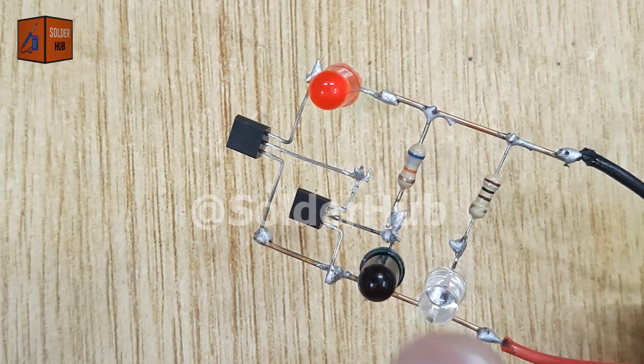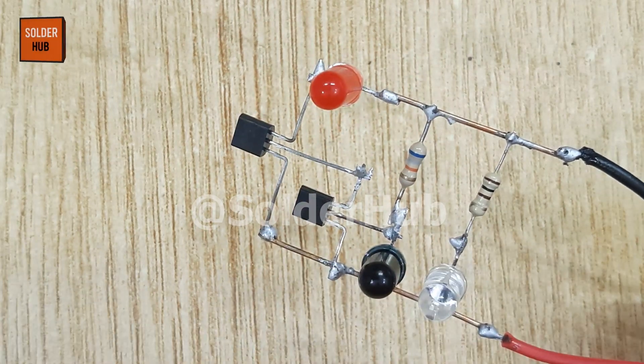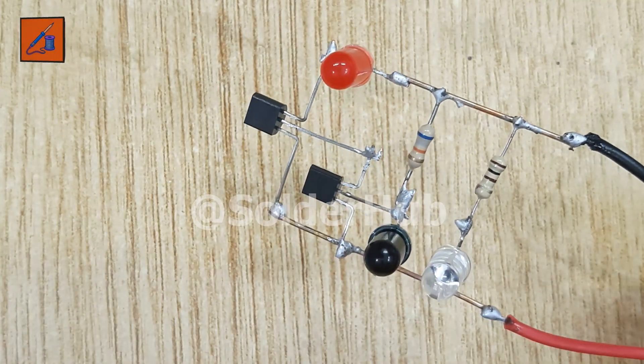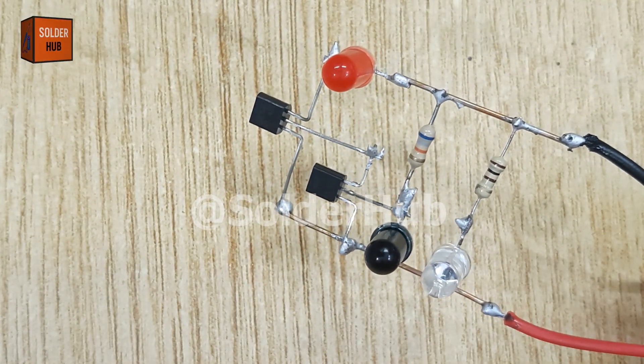This simple circuit can be used in automatic hand sanitizers, touchless doorbells, obstacle detection for robots, smart lighting systems, and even security alarms. Basically, anywhere you want automation without physical contact.